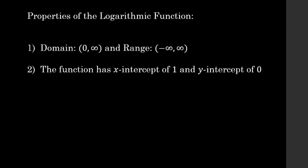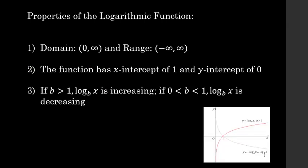Continuing with our properties: the logarithmic function has an x-intercept of 1 and a y-intercept of 0. If b is greater than 1, then the logarithmic function is increasing, as seen in the red line in our graph. If the base is between 0 and 1, then the logarithmic function is decreasing, noted by the blue or gray curve.